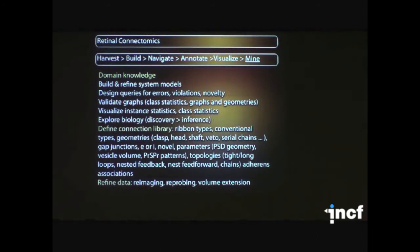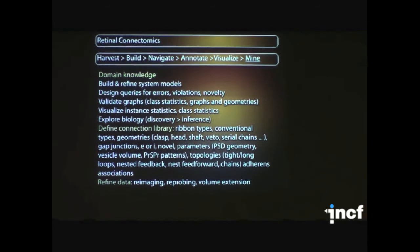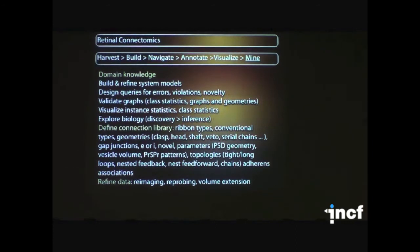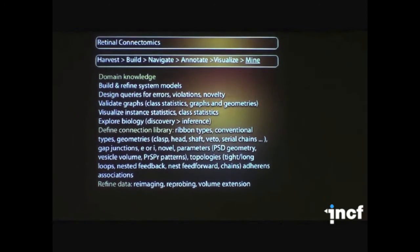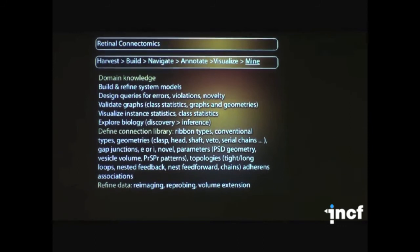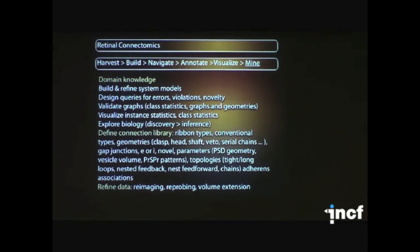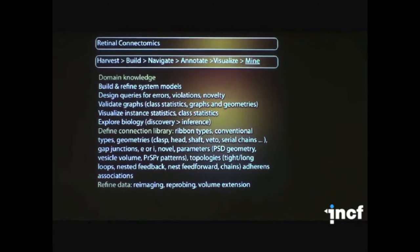And one of the barriers in doing this from the connectome data is how do you know your models are correct? How do you know what you want to look at? How do you know when you've discovered new things? That requires an expert. But it's also possible to design queries because you can create rules according to what we already know about retina. For example, bipolar cells never talk to bipolar cells. So if you see a bipolar, bipolar loop, you can flag that as an error. Cells don't talk to themselves. If you see self-talking loops, you can flag that as an error. Flagging novelty is a little bit more difficult, but we've been able to do that as well.